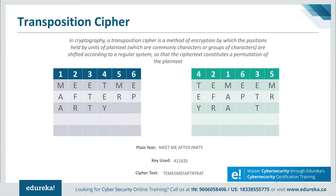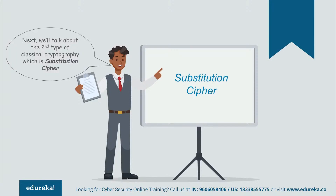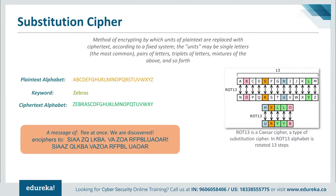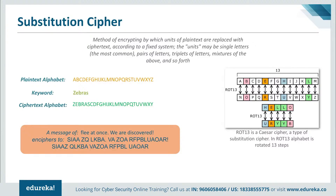In substitution cipher, single letters are substituted separately. Simple substitution can be demonstrated by writing the alphabet in some order to represent the substitution — this is called the substitution alphabet. The cipher alphabet may be shifted, reversed, or scrambled. Traditionally, mixed alphabets are created by first writing out a keyword, removing repeated letters, then writing all remaining letters in usual order. For example, the keyword 'zebras' gives a cipher alphabet starting with Z-E-B-R-A-S followed by the remaining letters C, D, F, G, H and so on.